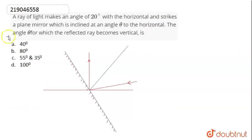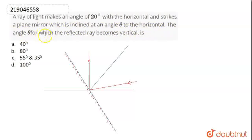Hi, welcome to Doubtnet. Our question is: a ray of light makes an angle of 20 degrees with the horizontal and strikes a plane mirror which is inclined at theta to the horizontal. Find the angle theta for which the reflected ray becomes vertical.